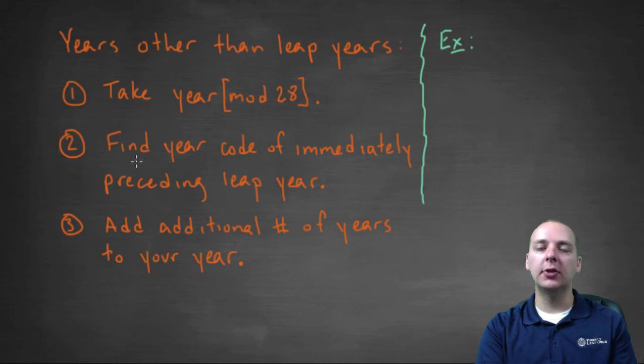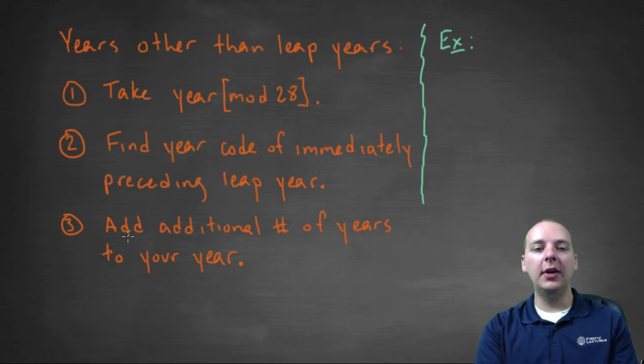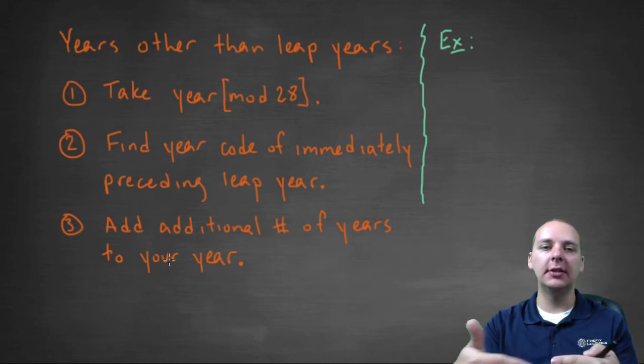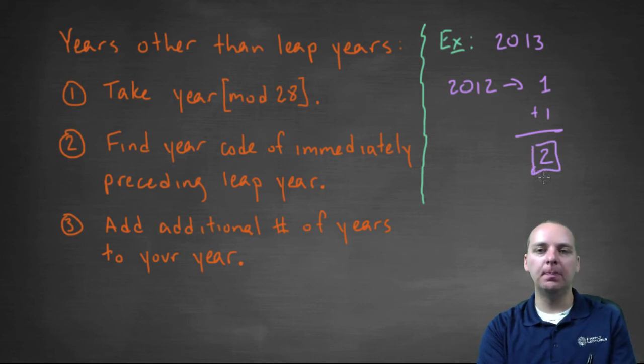Then what you're gonna do is you're gonna find the year code of the immediately preceding leap year. So, if your year is two thousand thirteen, the leap year that comes before that most closely is two thousand twelve. So you would find the year code for two thousand twelve, if you remember on the last page that was equal to one. And then you're gonna add how many additional years there is until you get to your year. So let's jot this one down. So if you had two thousand thirteen, then you're gonna look at the year code for two thousand twelve, the immediately preceding leap year. Year code was one. And then you're gonna add one extra year to get to two thousand thirteen. So two thousand thirteen's year code is two.